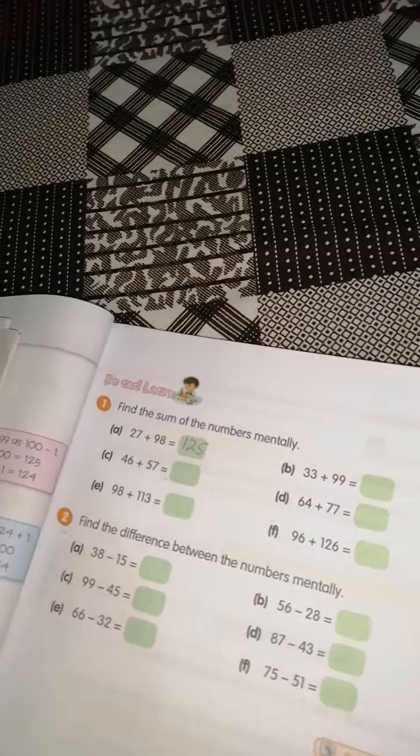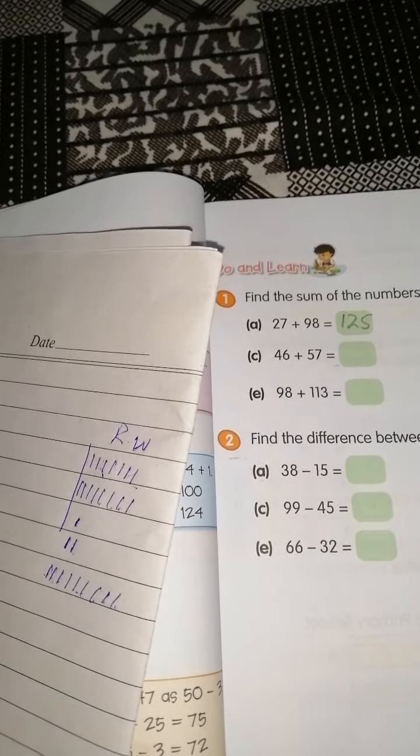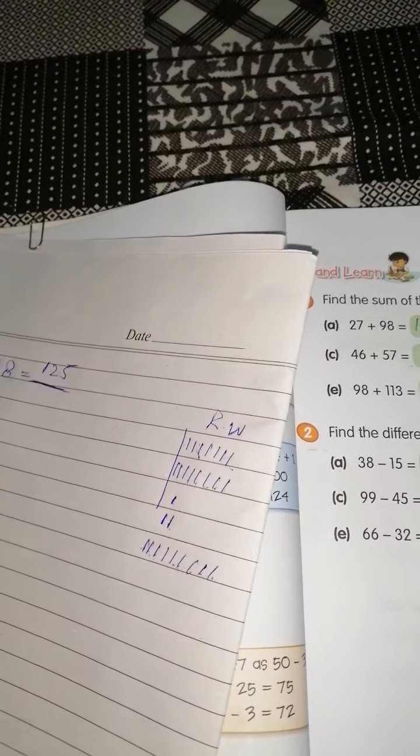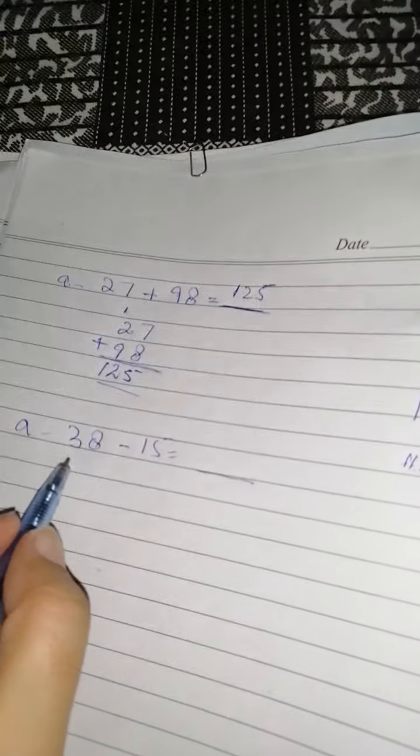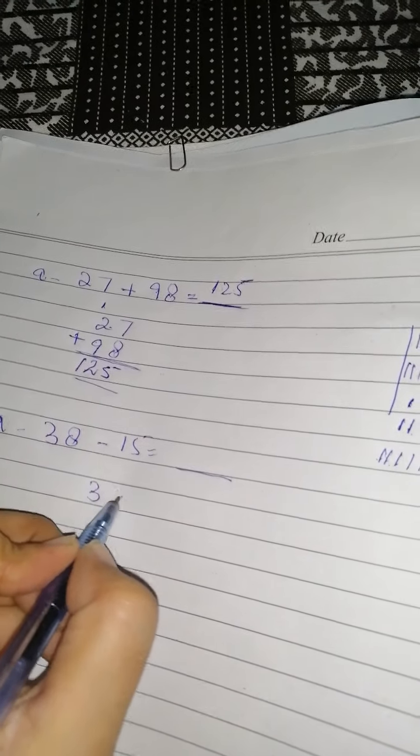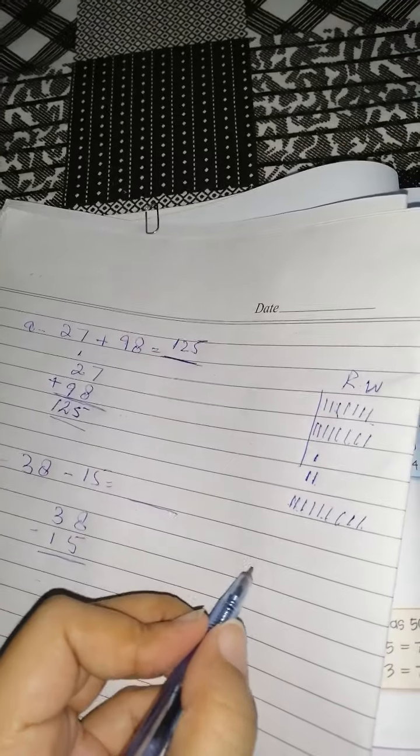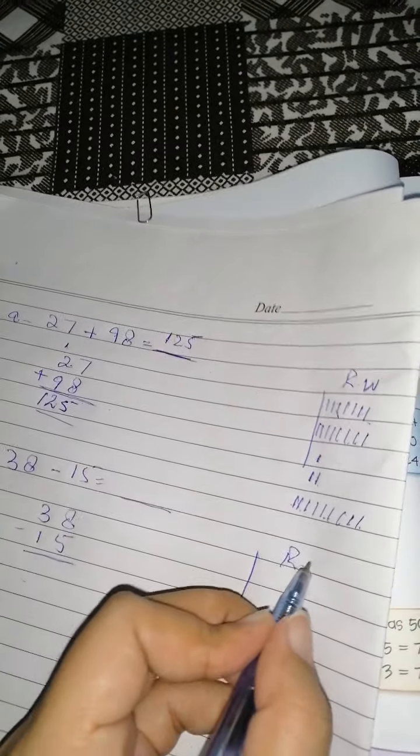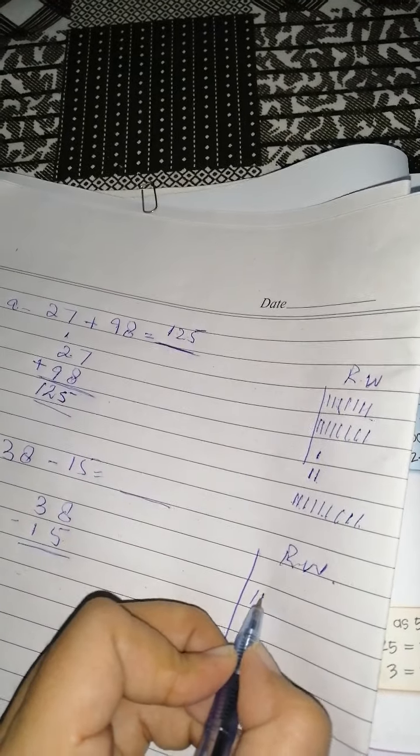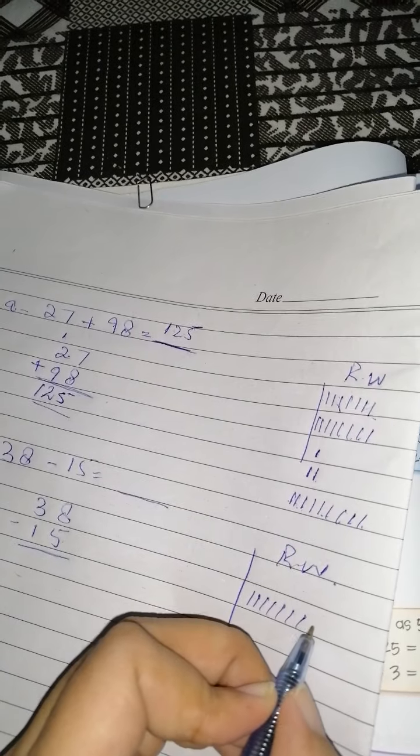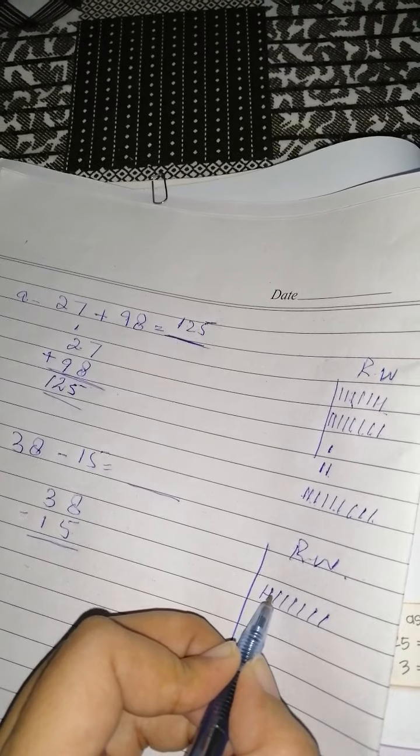اب میں آپ کو question number 2 کا age ہے وہ سمجھا رہی ہوں۔ اس میں آپ کو difference معلوم کرنا ہے۔ Question آپ کو دیا ہے: 38 minus 15۔ 38 minus 15 دیا ہے۔ آپ نے same وہی process کرنا ہے۔ اس طرح سے لگ لیا 38 minus 15۔ یہاں آپ نے بنا دیا rough column, rough work کا RW یعنی rough work۔ 8 اور 5: 1, 2, 3, 4, 5, 6, 7, 8۔